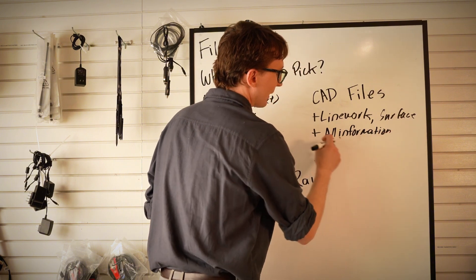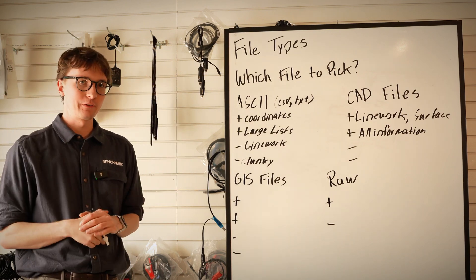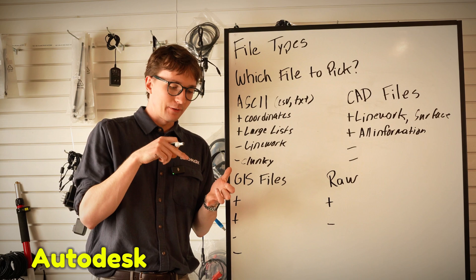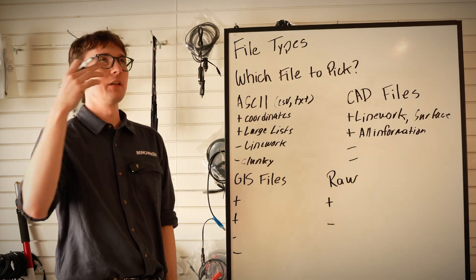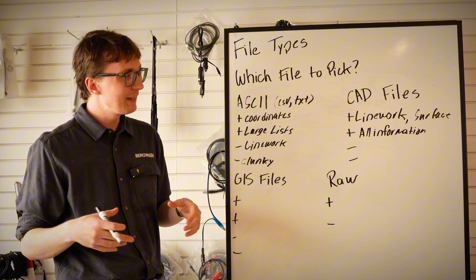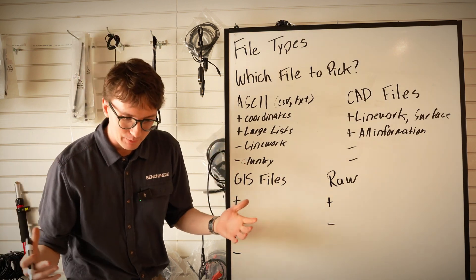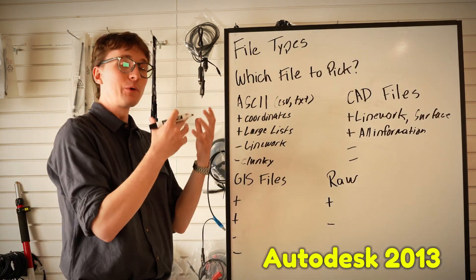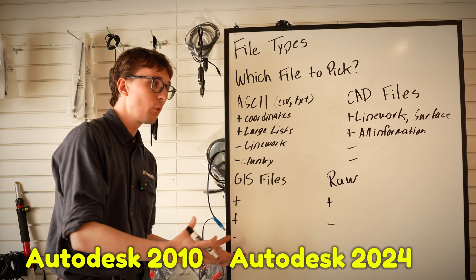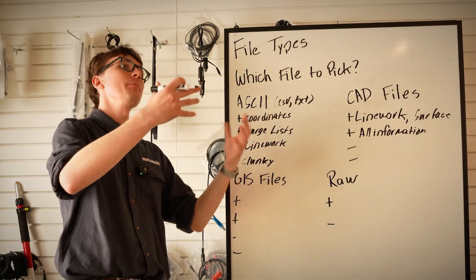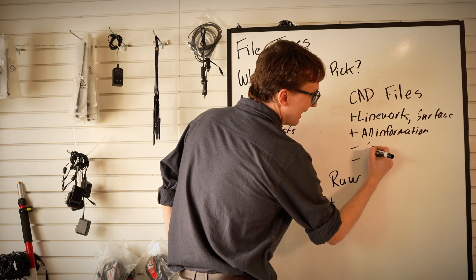There are some downsides to CAD files. First, there are a million versions of different CAD files. Autodesk alone has versions from 2013, 2014, 2015, 2016, 2017, 2018, 2019, 2020, on and on — every year releasing new features and assets. Some of these are not going to be compatible across software. Autodesk 2013 may contain different information that's not compatible with Autodesk 2010 or 2024. This means your data collector might not be able to bring in all of the information, requiring troubleshooting to ensure file compatibility.